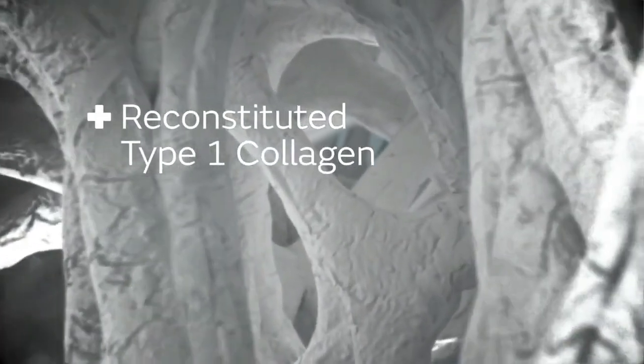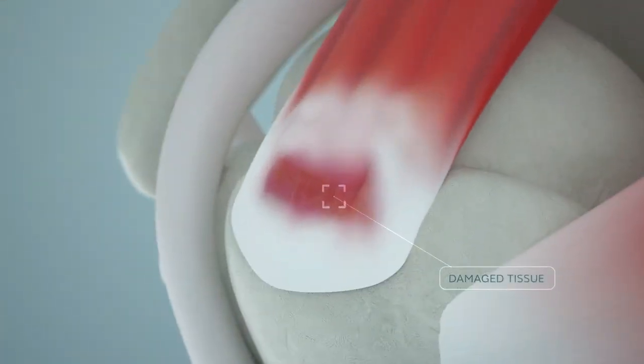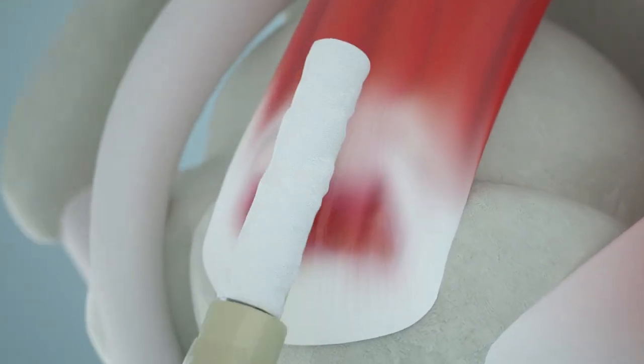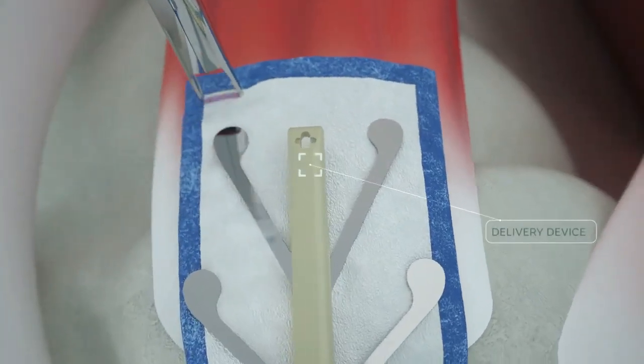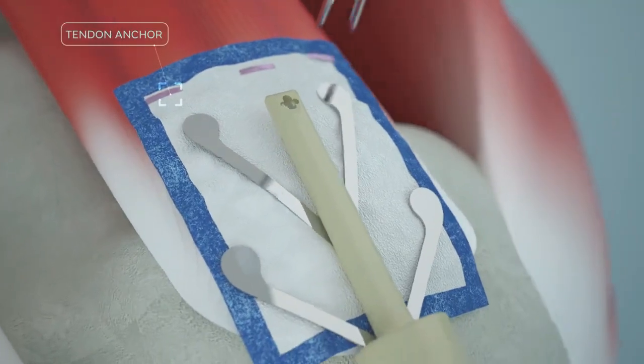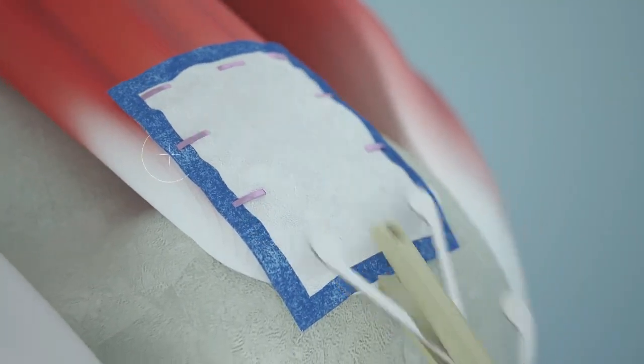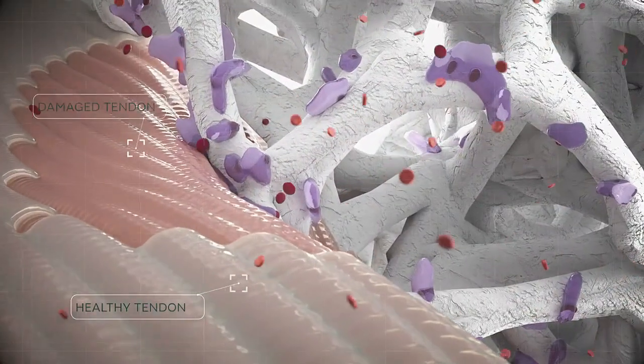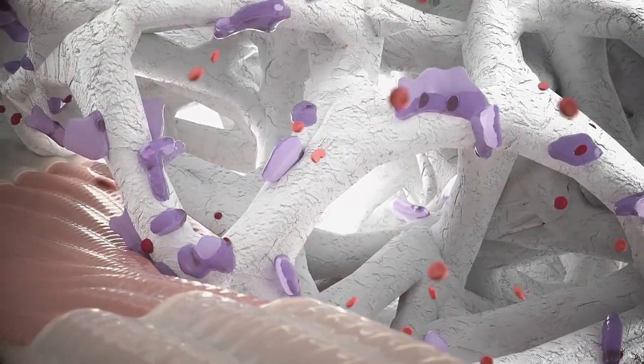It is a porous matrix of type 1 bovine collagen delivered from the lateral portal, covering the damaged tissue. We can use tendon anchors to fix it on the tendon and bone anchors to fix it on bone.